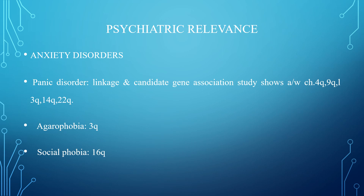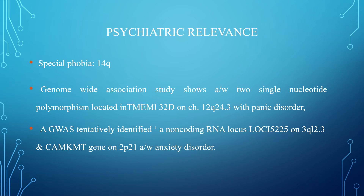In anxiety disorder: panic disorder linkage and candidate gene association studies show association with chromosomes 4Q, 9Q, 1Q, 3Q, 14Q, and 22Q. Agoraphobia is linked to 3Q, social phobia with 16Q, and specific phobias with 14Q. Genome-wide association studies show association between two single nucleotide polymorphisms located in TMEM132D on chromosome 12Q24.3 with panic disorder. GWAS tentatively identify a non-coding RNA locus LOC152225 on 3Q12.3 and the CAMKMT gene on 2P21 associated with anxiety disorder.